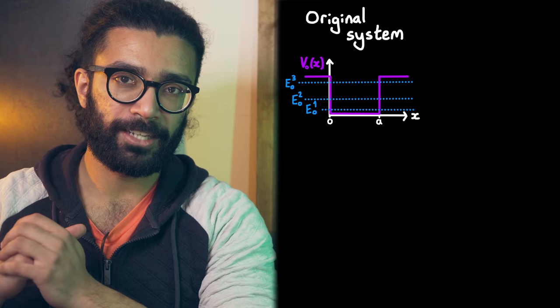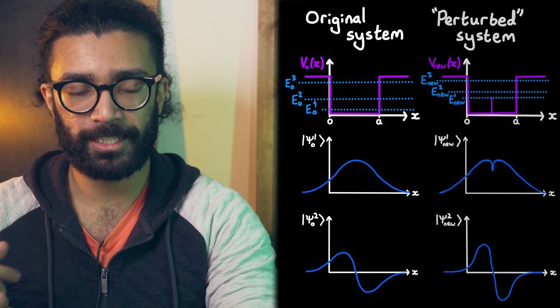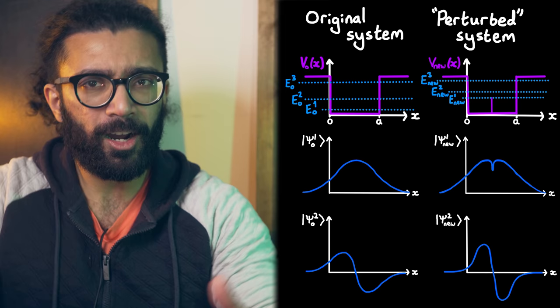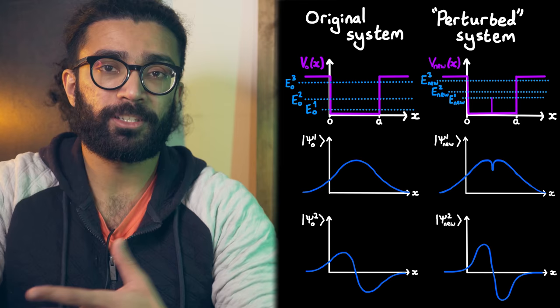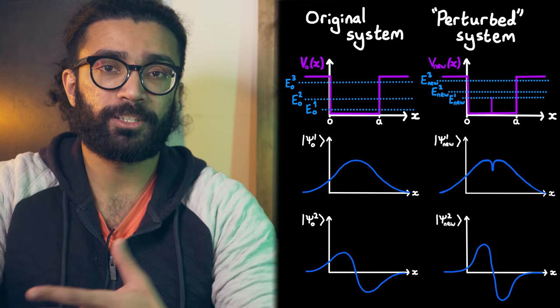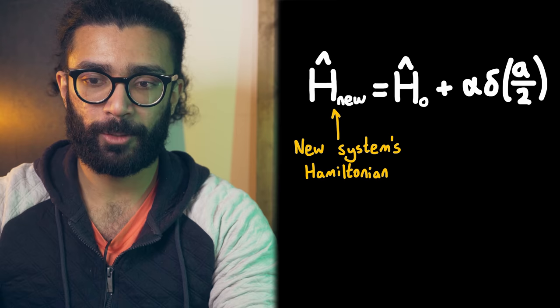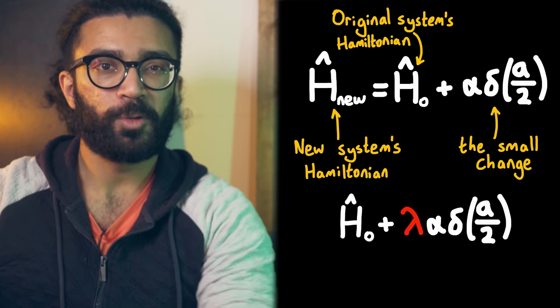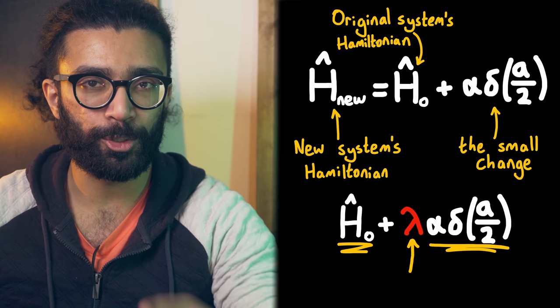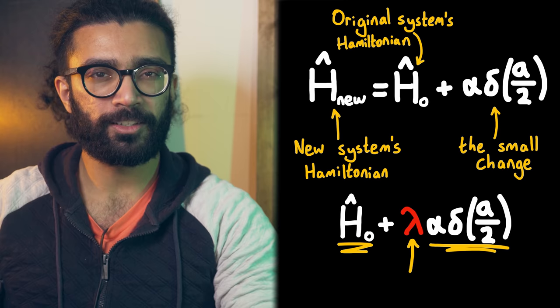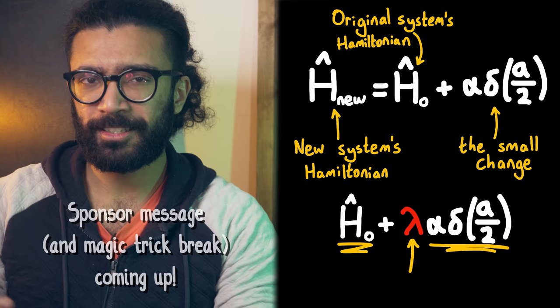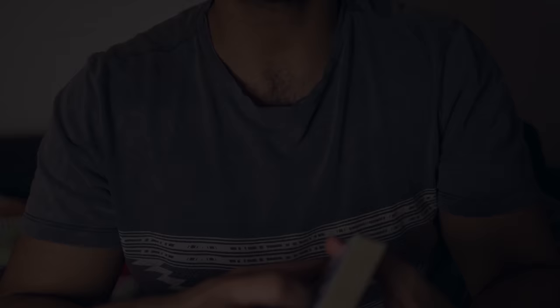Luckily, because the new system's perturbation is small, the energy levels and wave functions end up shifting only very slightly compared to the first system. Mathematically, we can write the new system's Hamiltonian — the part of the Schrödinger equation where we put in information about our system — as the old system's Hamiltonian plus the small change. We also use a parameter lambda that takes values between 0 and 1, simulating the switching on of the perturbation. In practice, this lambda helps us in the long mathematical steps we have to take to apply perturbation theory.